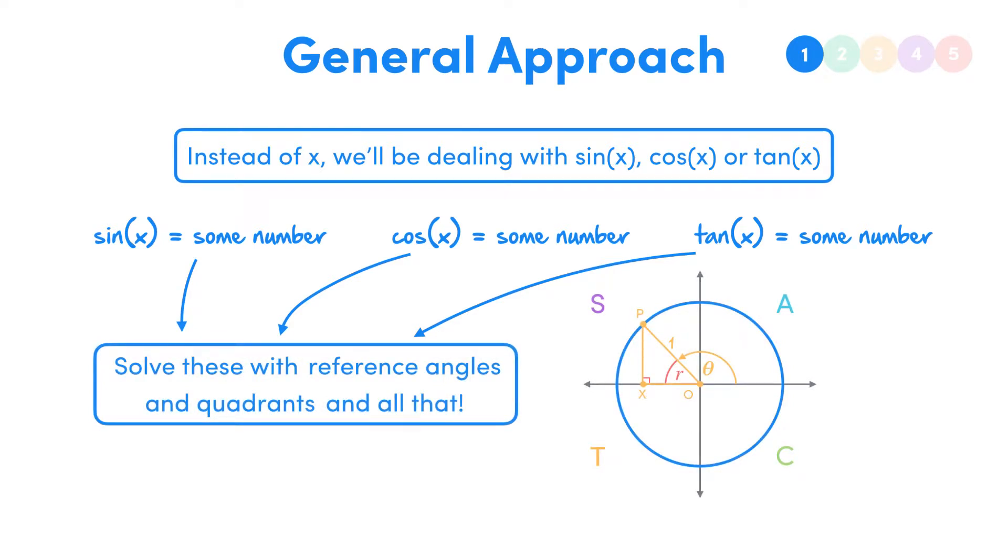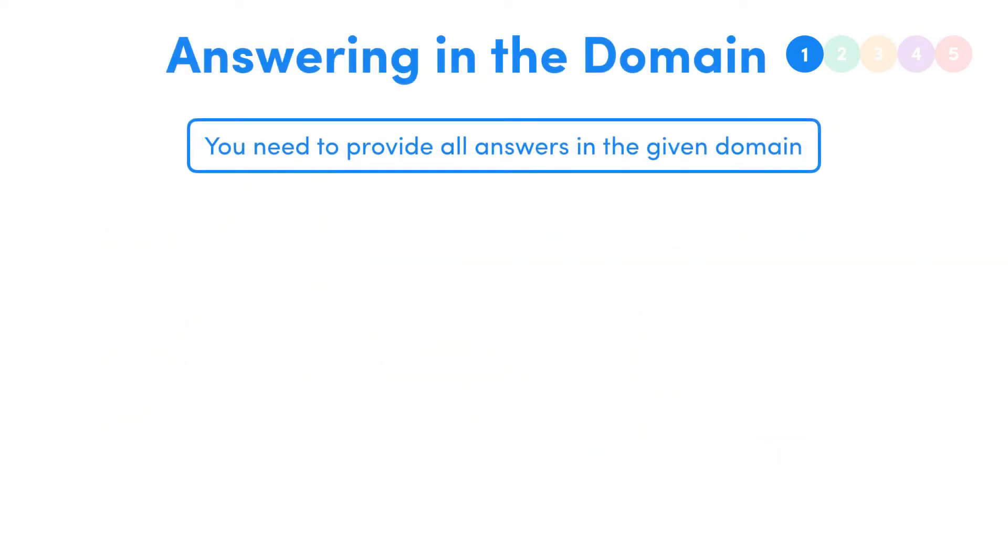So basically it's the same process, but instead of our variable, we have a sin, cos, or a tan. Often though, we'll be asked to give our answers only in a particular domain.